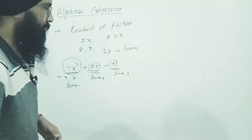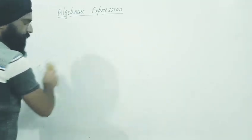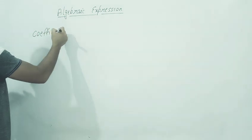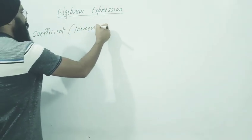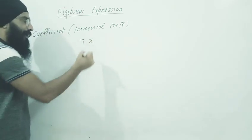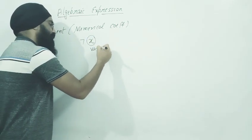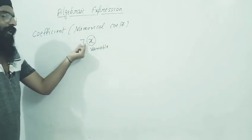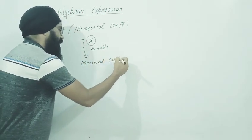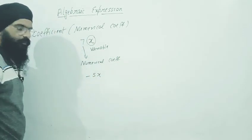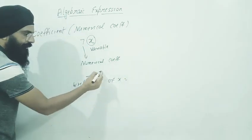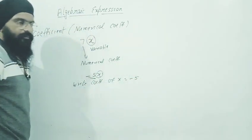And each term is the product of factors. Whatever factors are in the expression, we multiply them to form a term. Next, on the basis of terms, we have numerical coefficient. Numerical coefficient - if I write 7x, look, x is a variable. Whatever is multiplied with the variable is called numerical coefficient. Like if I write minus 5x, and you're asked to write the coefficient of x, look - minus 5 is multiplied with x, so we will write minus 5.